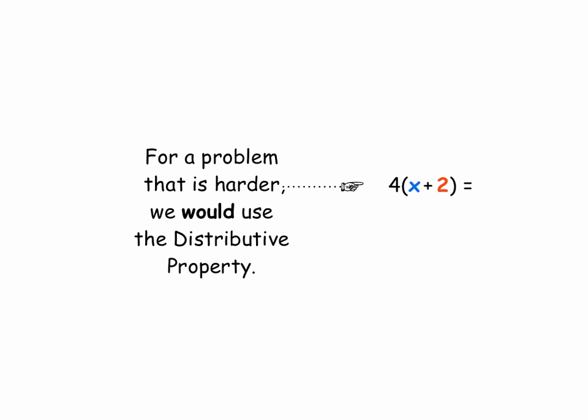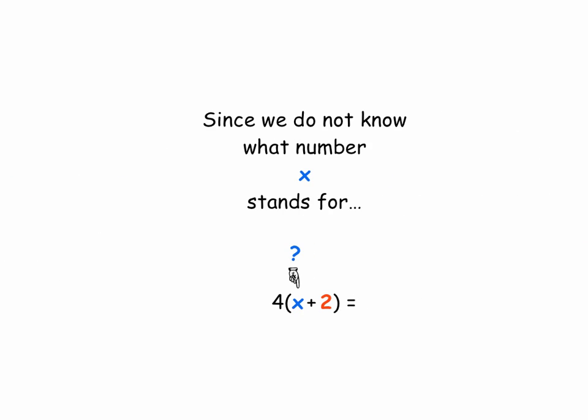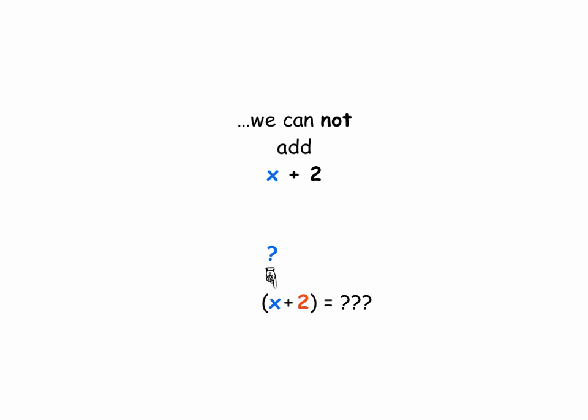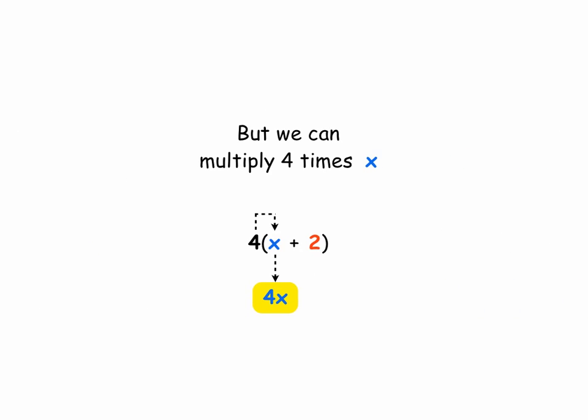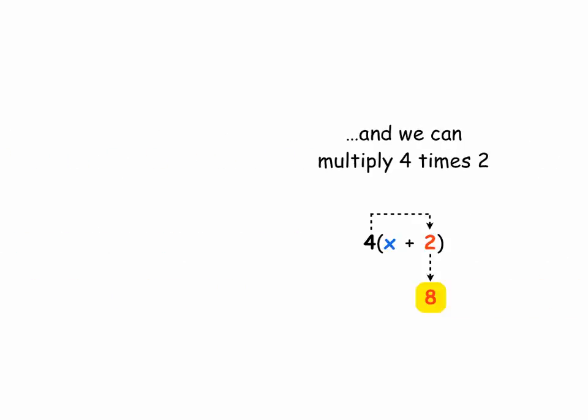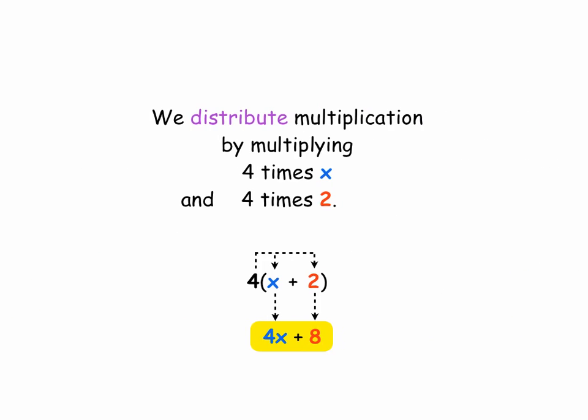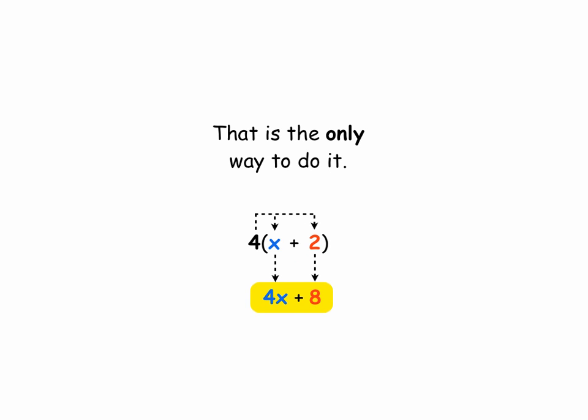But for a problem that is harder, like this one, we would use the Distributive Property: four times x plus two. Since we do not know what number x stands for — four times x plus two, some number plus two — we cannot add x plus two. What is x plus two? We don't know. Since we don't know what x is, you can't add them together. But we can multiply four times x — four times x is just four x. And we can multiply four times two — that gives you eight. We distribute multiplication by multiplying four times x and four times two. Four times x gives you four x, four times two gives you eight. That is the only way to do it.